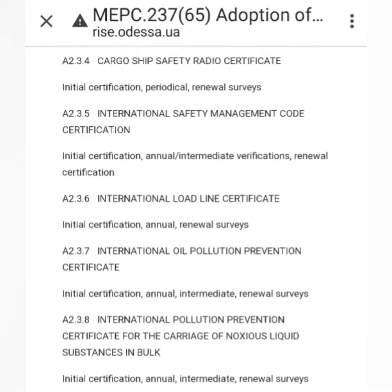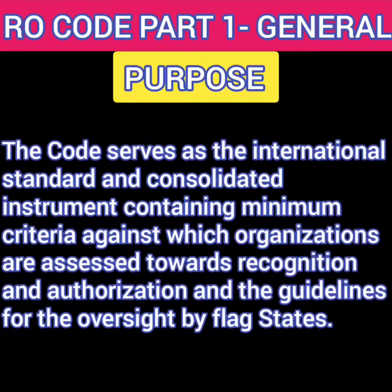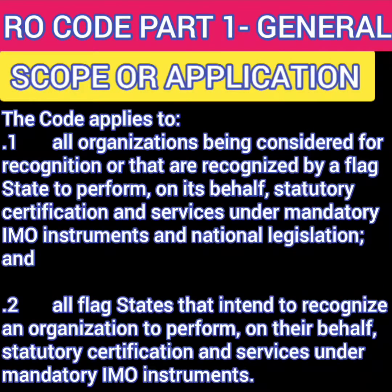Now let's dive a little deeper into the contents, starting with part one — purpose. The purpose of this code is that it provides minimum criteria against which organizations are assessed towards recognition and authorization. Now that we know the purpose of this code, let's understand who it applies to. It would apply to any organization which wants to carry out the duties of a flag administration on behalf of the flag state after receiving authorization and recognition. Secondly, it applies to the flag state which intends to recognize an organization to perform statutory certification and services on their behalf.